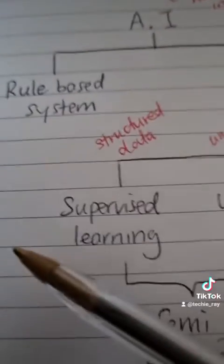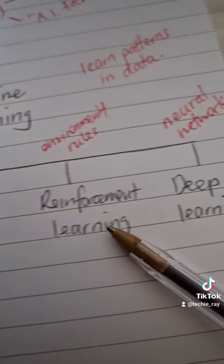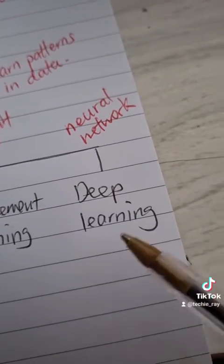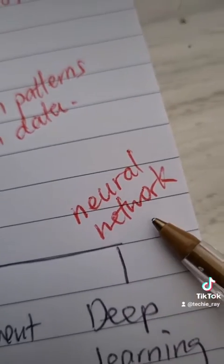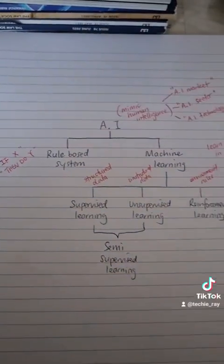And finally, the coolest and most advanced form of machine learning is deep learning, which seeks to copy how the human brain works by using something called a neural network. And that's AI in a nutshell. Follow me for more simple AI tutorials.